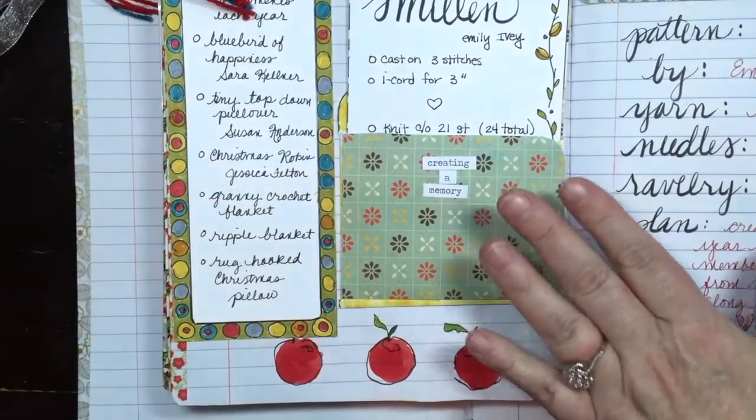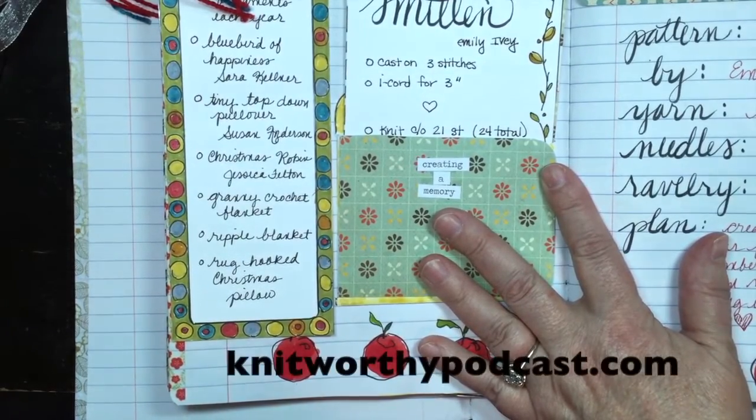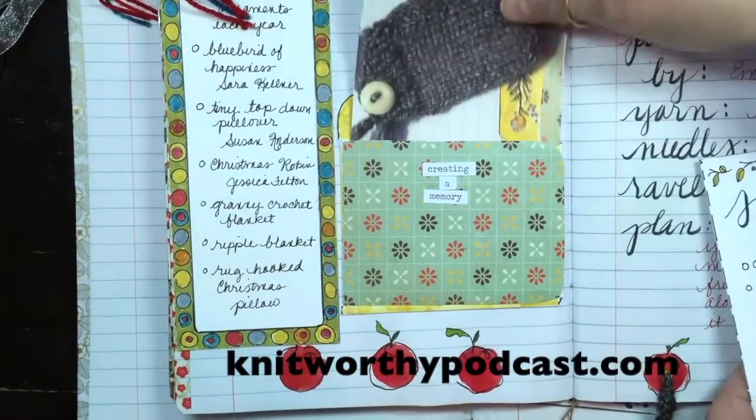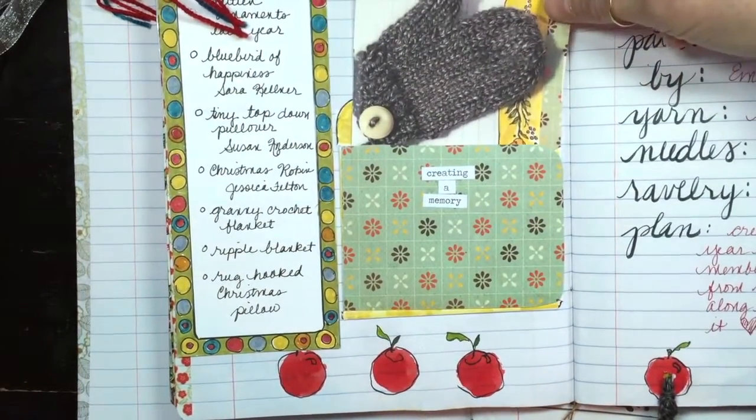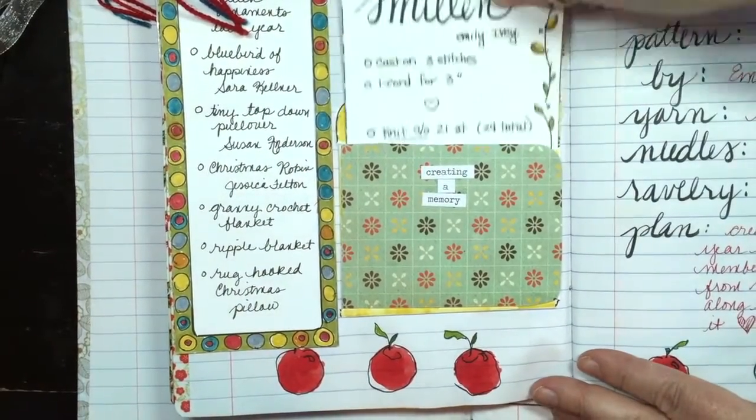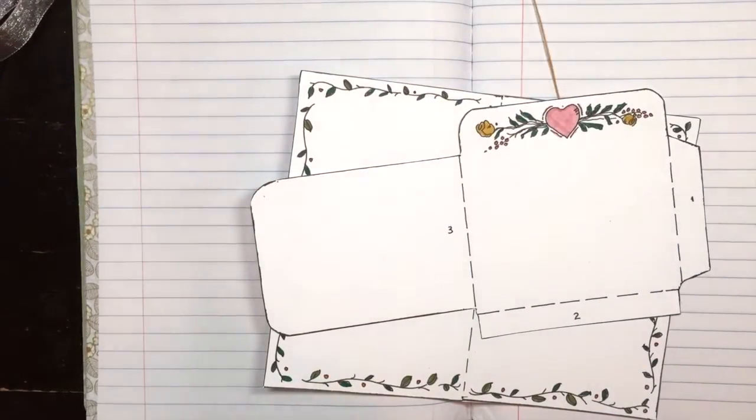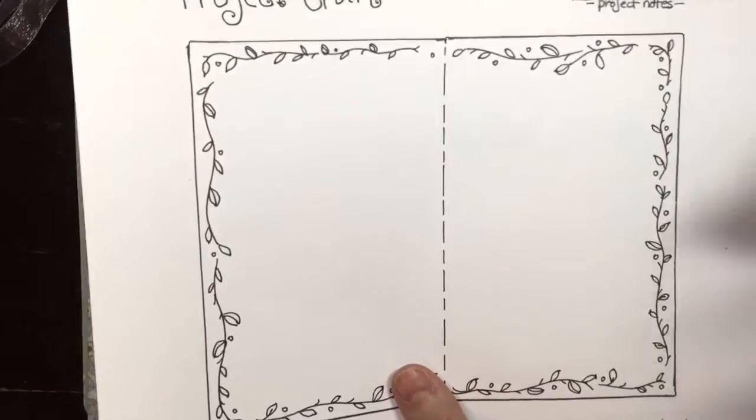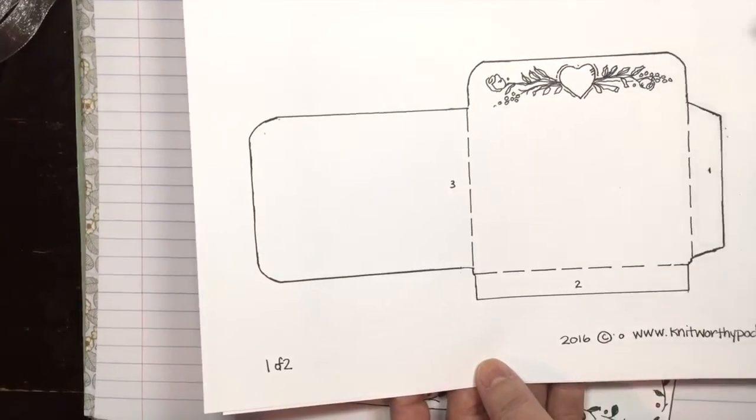But we're going to make one using the template that is in the Project Craft tab on our website, knitworthypodcast.com. What I used it for this time was I put a copy of my mitten pattern that I'm going to be using as an ongoing challenge so I wouldn't have to keep looking it up. I also put a picture of what I was making so I wouldn't forget what it was supposed to turn out like.